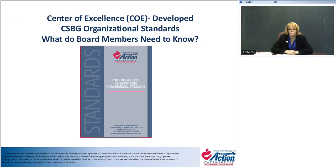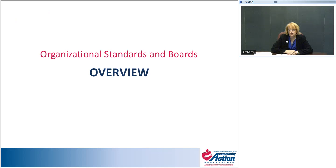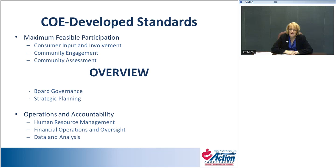We're going to walk through a series of videos that you have access to — you can play back, rewind, and watch numerous times — that overview 58 organizational standards. These organizational standards come out of a two-year project with the Office of Community Services, done in conjunction with the entire Community Action Network: local community action agencies, state associations, state CSBG offices, and the national partners. What we ended up with was a total of 58 standards, but nine categorical areas.